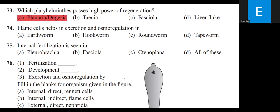Flame cells help in excretion and osmoregulation in which organism? Options: Earthworm, Hookworm, Roundworm, Tapeworm. The answer is Tapeworm, which belongs to Platyhelminthes.